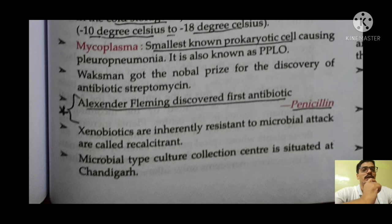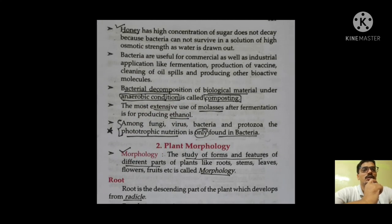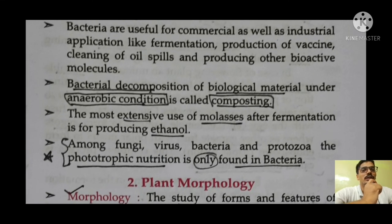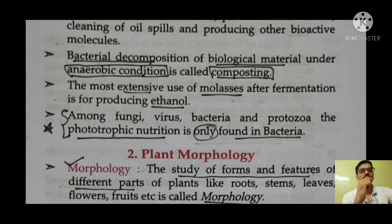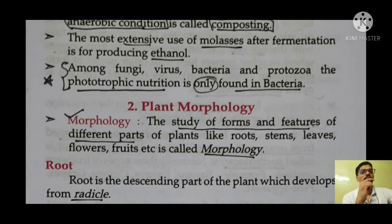Alexander Fleming discovered the first antibiotic, penicillin — a very important exam point. Bacterial decomposition of biological material under anaerobic conditions (absence of oxygen) is called composting. The extensive use of molasses — the residue after extraction of juice from sugarcane — is for producing ethanol. Among fungi, bacteria, virus, and protozoa, phototrophic nutrition only happens in bacteria — a very important point.